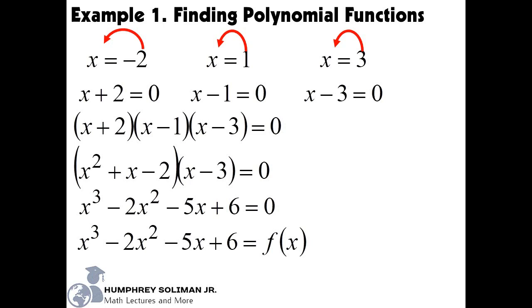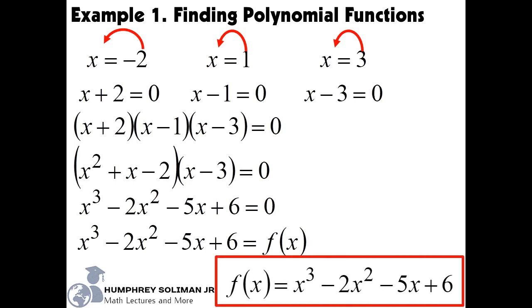So our final answer, the function whose zeros are negative 2, 1, and 3, is f of x equals x cubed minus 2x squared minus 5x plus 6.